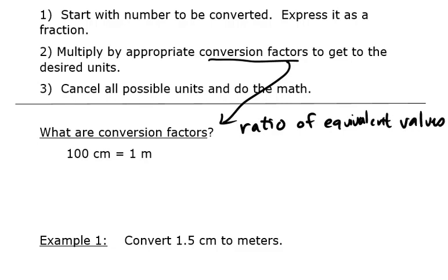Ratio is another way of saying a fraction. Equivalent values: we learned from the previous video that 100 centimeters is 1 meter. Centa means 100 of something equals the base unit. So that's an equivalency.